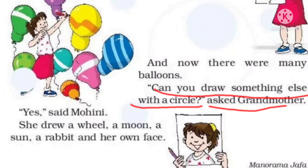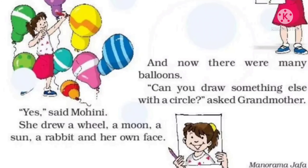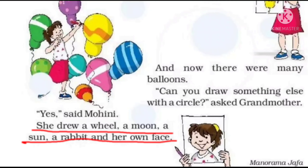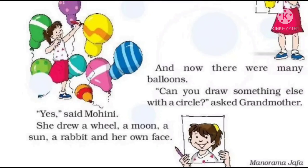Can you draw something else with a circle? Ask Grandmother. Toh uski Grandmother ne poocha. Yes, said Mohini. Main aur bhi bahut kuch bana sakti hoon. She drew a wheel, a moon, a sun, a rabbit and her own face. Toh usne circle bana ke: wheel yani paiya, moon yani chaand, sun yani suraj, rabbit yani khargosh, aur apna khud ka face yani chehra banaya.